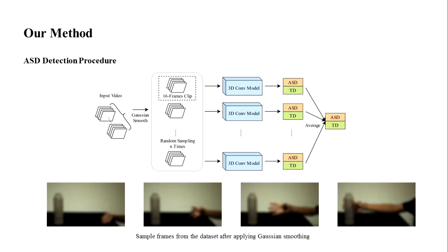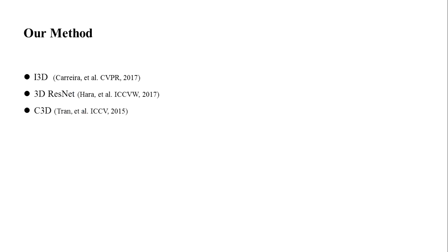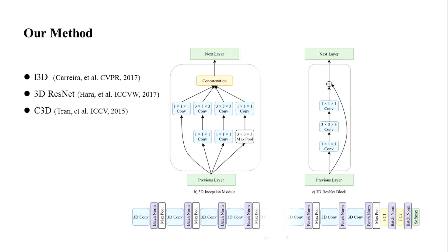Here are some sample frames from the dataset after applying Gaussian smoothing. To explore the performance of 3D computational models on the ASD detection task, we propose a new 3D computational model by inflating all the 2D convolution and pooling kernels in the ResNet model into 3D kernels. We also add three different 3D computational models for comparison, and here are the structures of these three models.